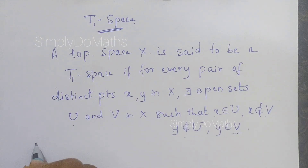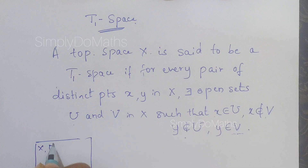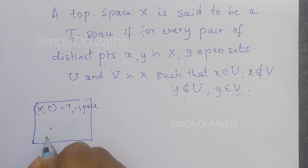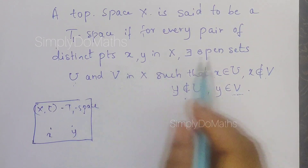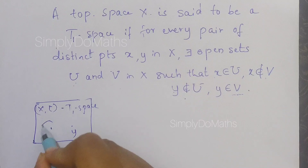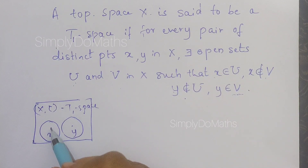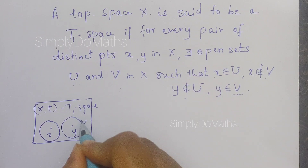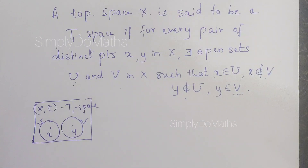In diagrammatic form, we can draw T1 space X as having two distinct points x and y, where x ≠ y. We need two open sets U and V such that one element belongs to one open set, the other element belongs to the other open set, but x doesn't belong to V and y doesn't belong to U.